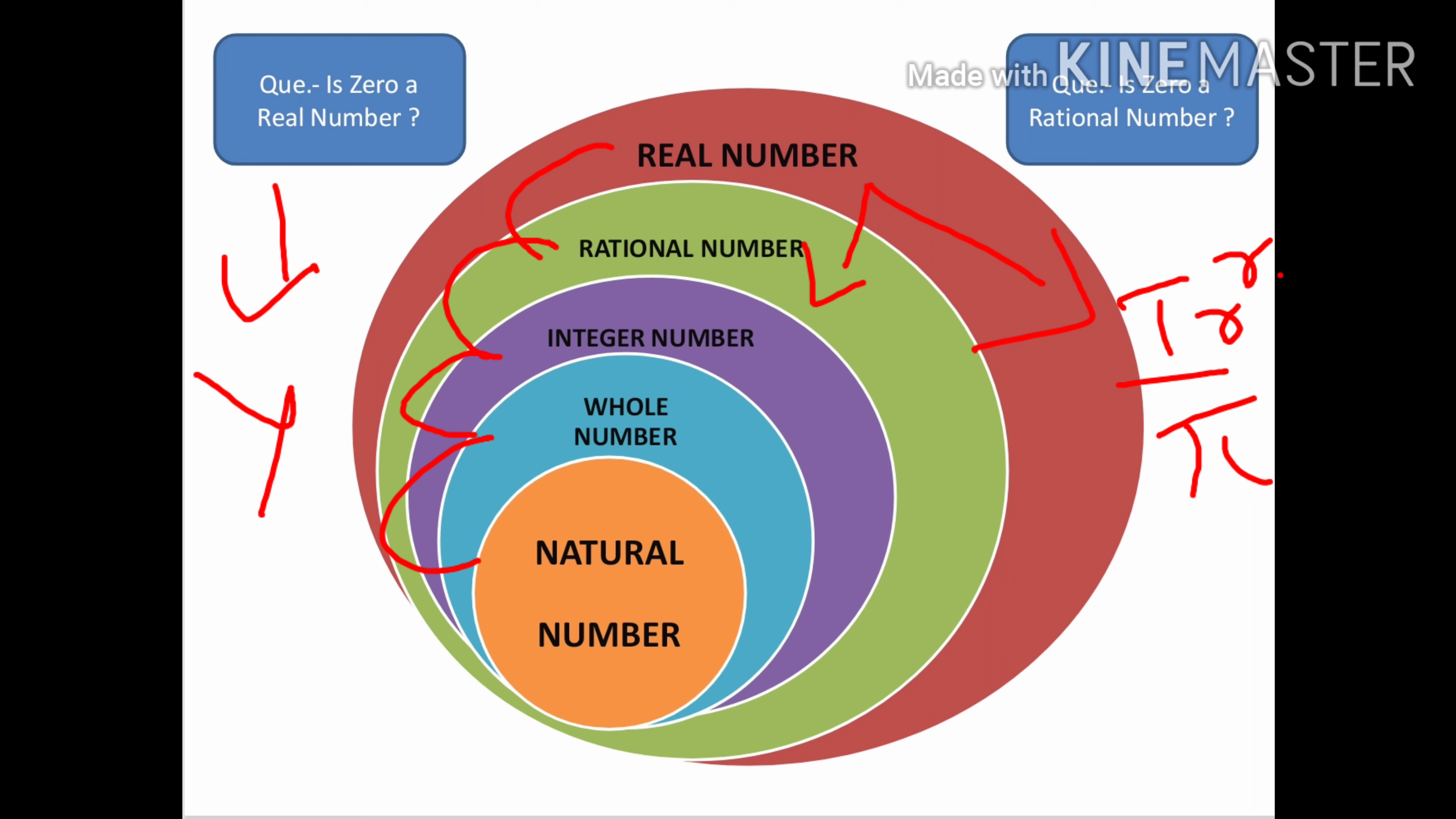Now what type of objective questions can be asked? For example, is zero a real number? Zero comes in whole numbers, and whole is in real numbers, so yes, zero is a real number. Next question: is zero a rational number? Zero comes in whole, and whole comes in rational, so yes. Similarly, any question can be asked. Like about pi - it doesn't come in these, pi comes in irrational. But twenty-two upon seven, if written as a fraction, comes in real because it's in fraction form, while pi comes in irrational. These types of questions can be formed from this.